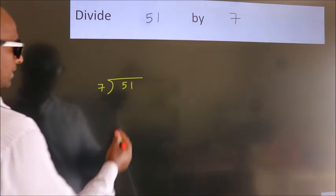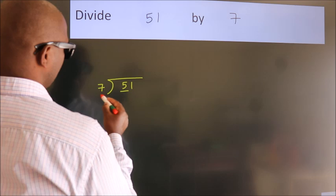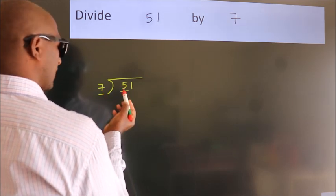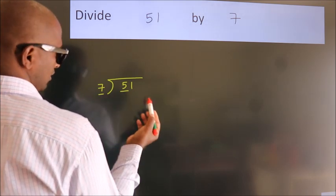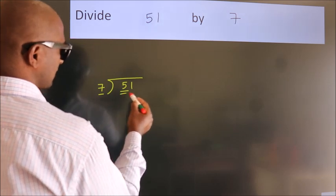Next. Here we have 5. Here 7. 5 smaller than 7. So we should take 2 numbers. 51.